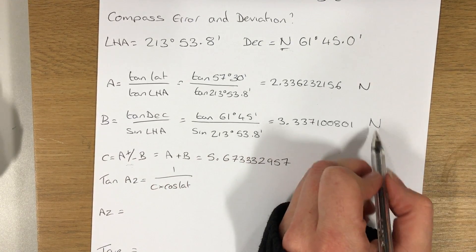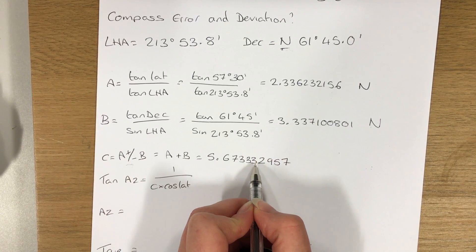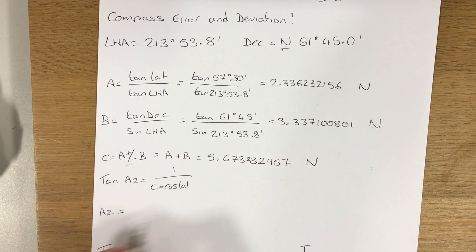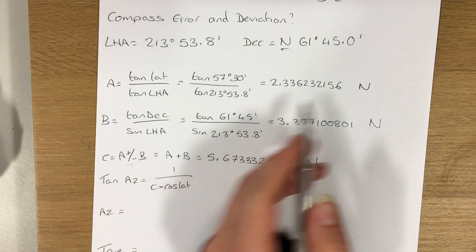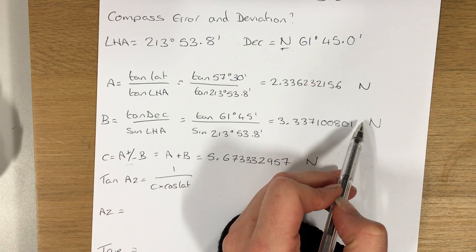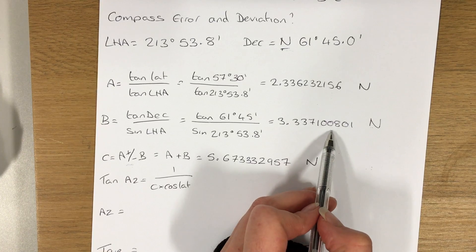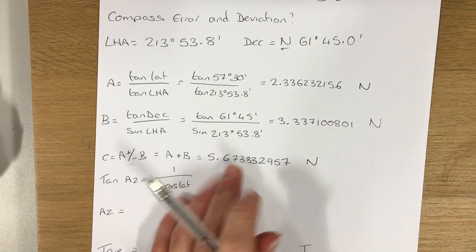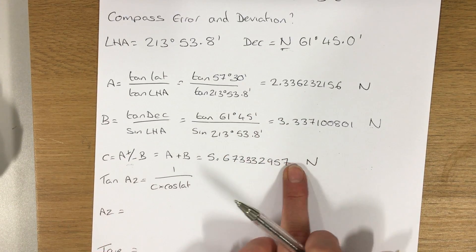Now again, just like A and B, C needs to take a name also. Because A and B are both north, I can name C north. If A and B were different names, then C would get named whichever had the largest value. So I found A, I found B, and I've used them both to find C.